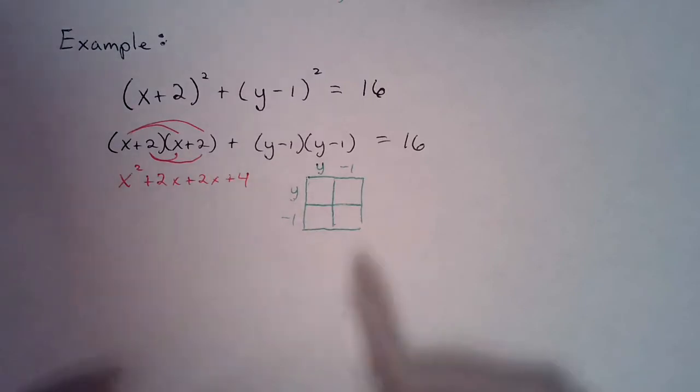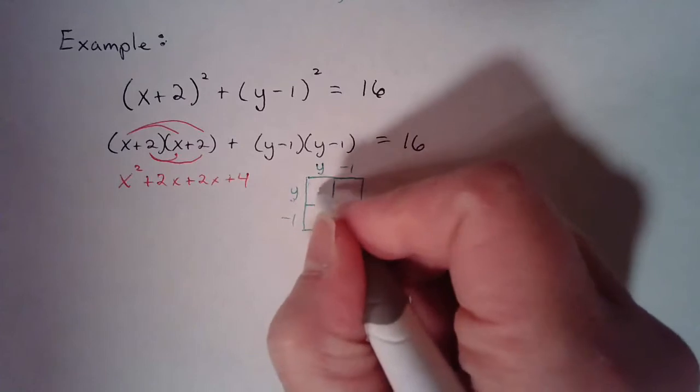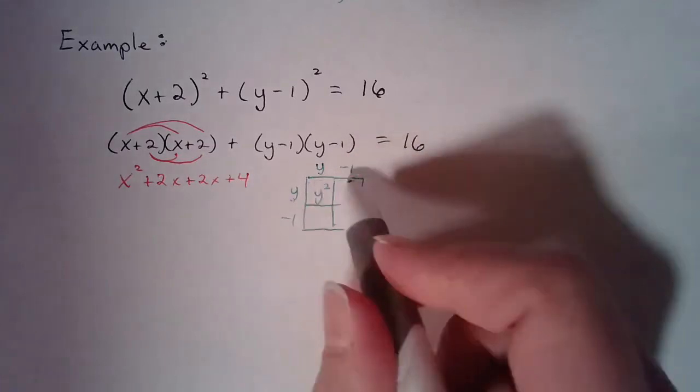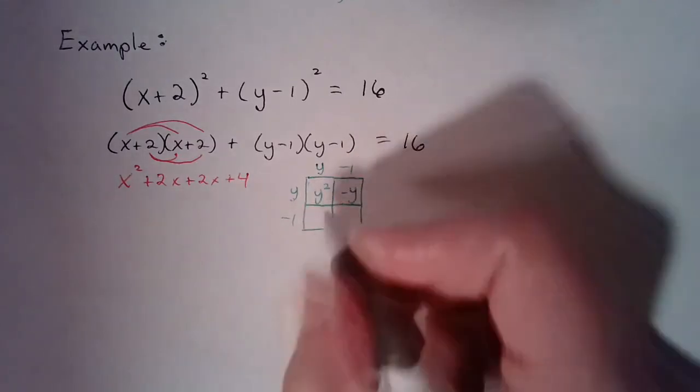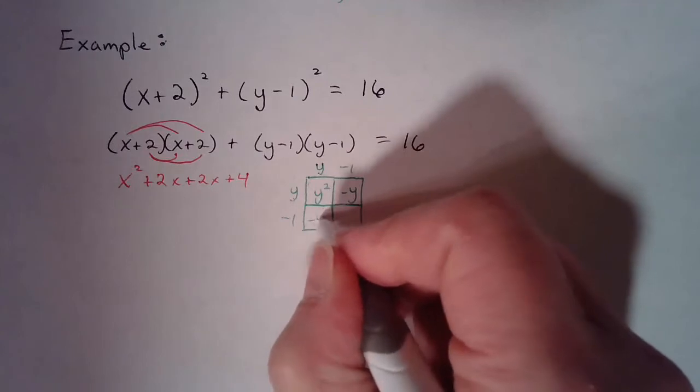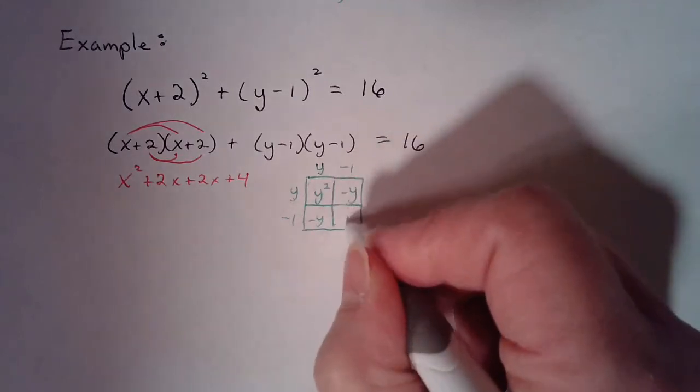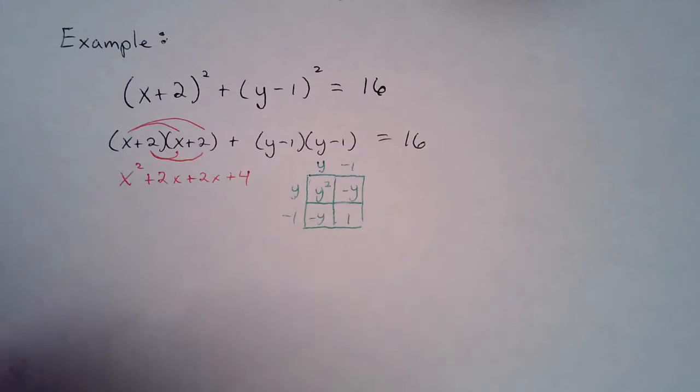Alright, so now on this next part, I'm going to use an area model to multiply this out so you can see this method as well. So when we have y times y, that's y². And then y times negative one is negative y. Y times negative one is negative y. And negative one times negative one is a positive one.